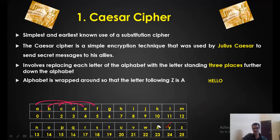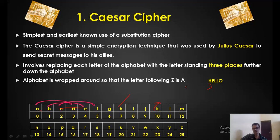Now let us take the example of the word 'hello.' Julius Caesar wants to send 'hello' to his friend. H has to be replaced by what? Corresponding to 3 places: H is 7, plus 3 is 10, replaced by K. E is replaced by H because 4 plus 3 is 7. Similarly you replace all other alphabets, and the corresponding ciphertext we get is K H O O R — which is meaningless. No English word exists with this combination of alphabets. So 'hello' is replaced by 'khoor' and nobody can understand it — it is a cryptic cipher.